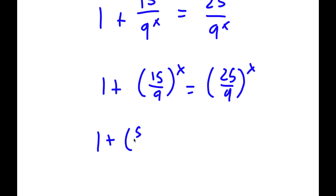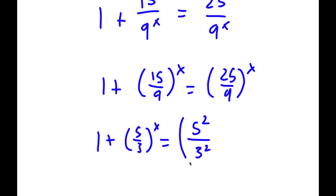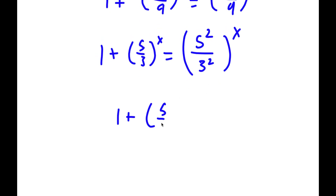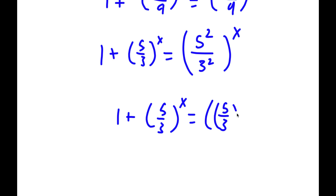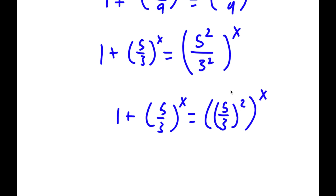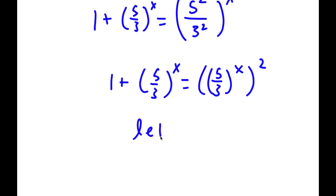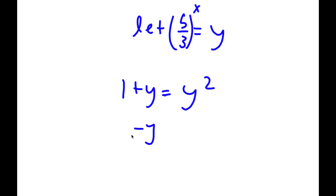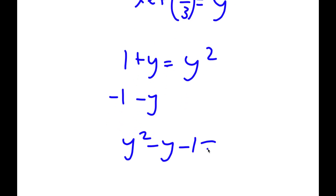Now, 15 over 9 simplifies to 5 over 3. And 25 over 9, we can rewrite as 5 squared over 3 squared, so now I have (5 squared over 3 squared) to the power of x. I can write 5 squared over 3 squared as (5 over 3) to the power of 2, so this becomes (5 over 3) to the power of x to the power of 2. I'm going to let y equal (5 over 3) to the power of x, so now I have 1 plus y equals y squared. Subtracting y and 1 on both sides gives y squared minus y minus 1 equals 0.